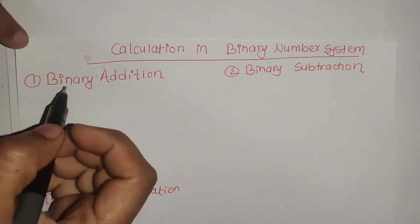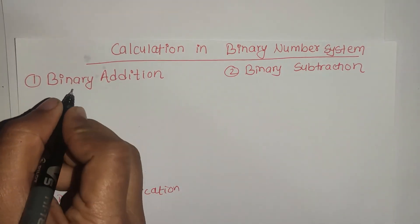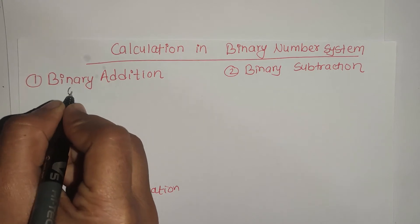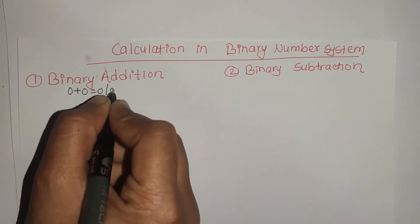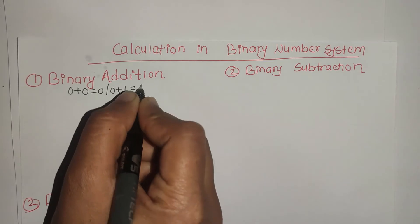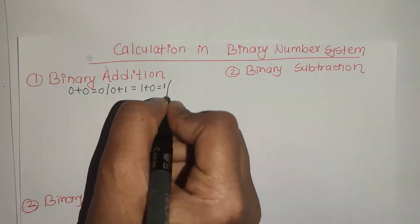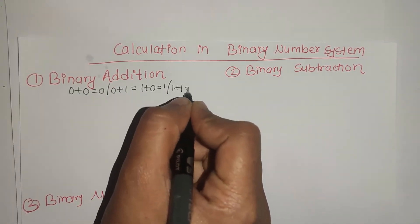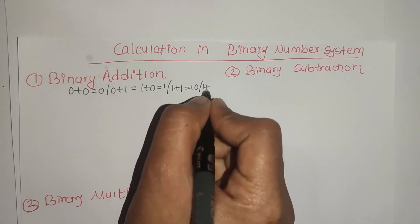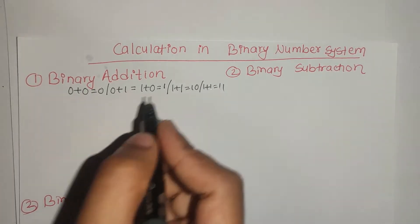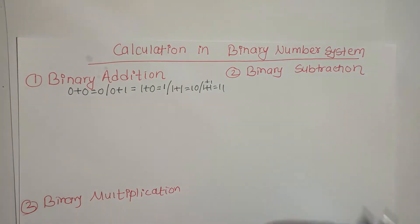So in binary addition, the basic rules we need to know are: 0 plus 0 is equal to 0, 0 plus 1 is equal to 1, 1 plus 0 is equal to 1, 1 plus 1 is equal to 10, and 1 plus 1 plus 1 is equal to 11.